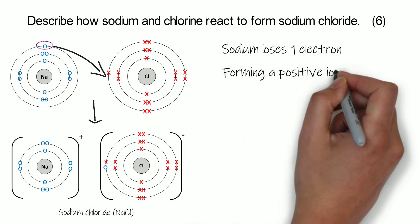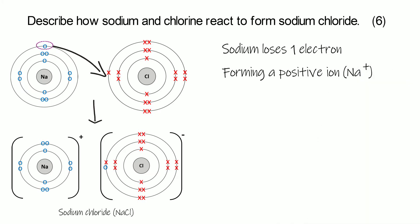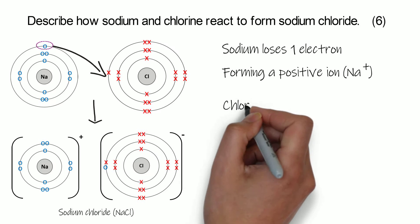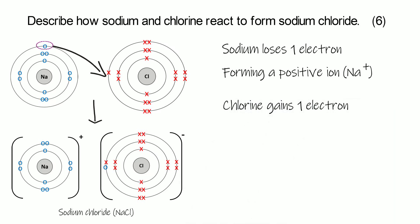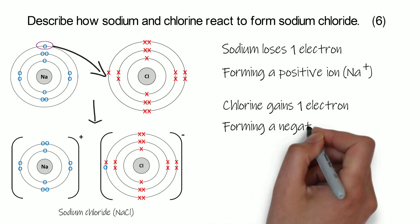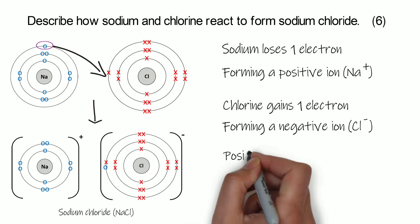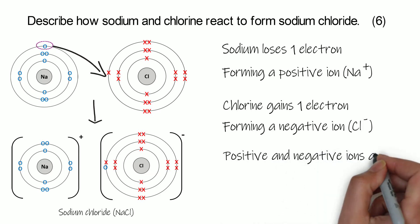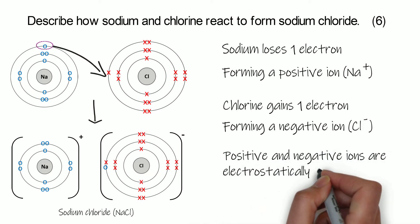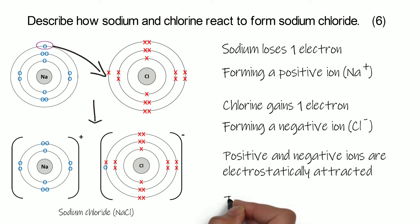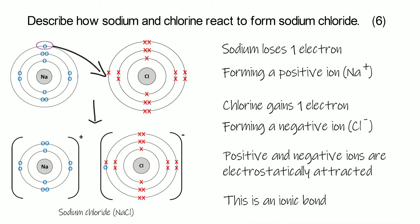On the mark scheme you might see: sodium loses one electron; it forms a positive ion — if you can name the ion, in this case Na⁺, even better. Chlorine gains an electron in order to get a full outer shell, so it forms a negative ion — in this case a Cl⁻ ion. Because the sodium ion is positive and the chloride ion is negative, there'll be an attraction between them. We call this an electrostatic attraction, and this attraction between positive and negative ions is called an ionic bond.